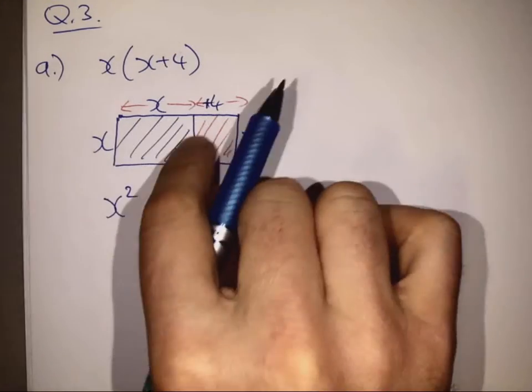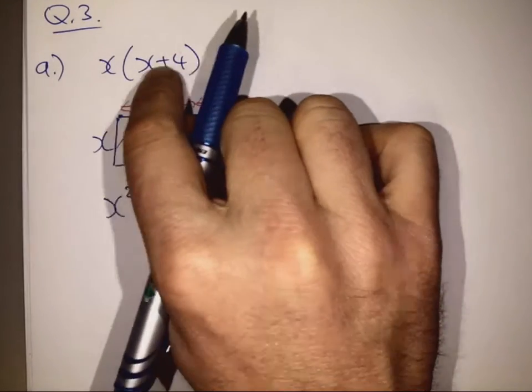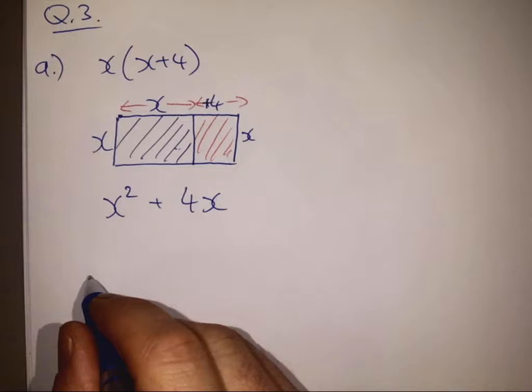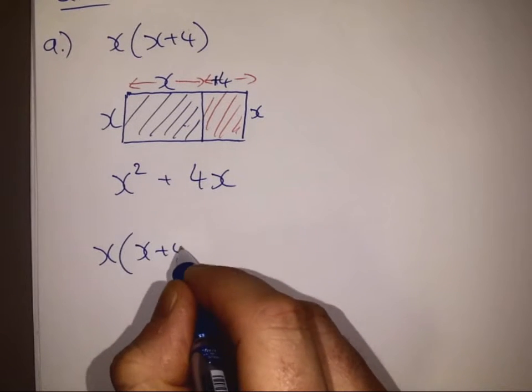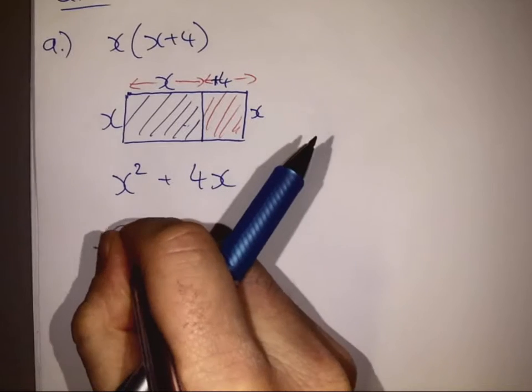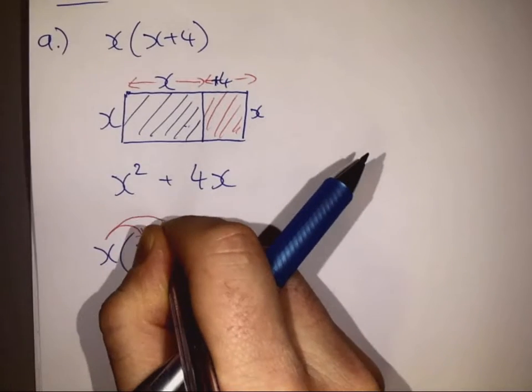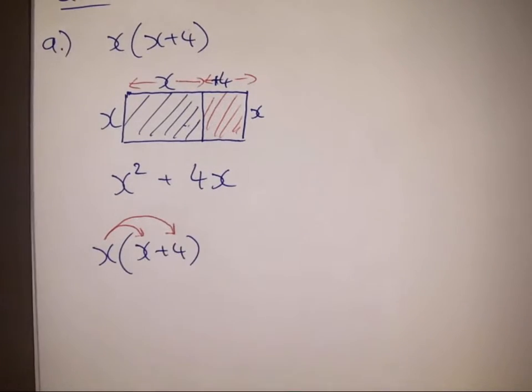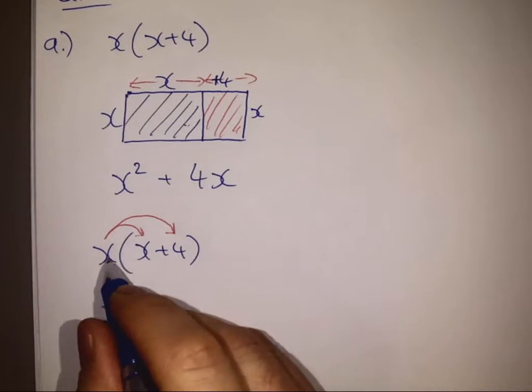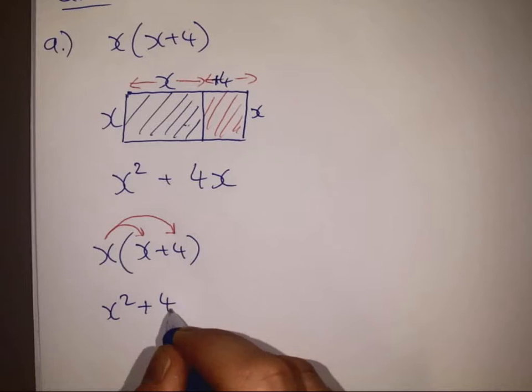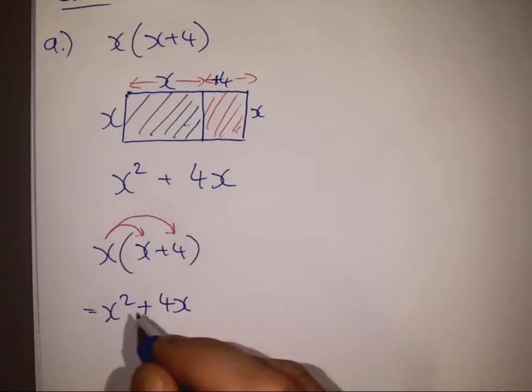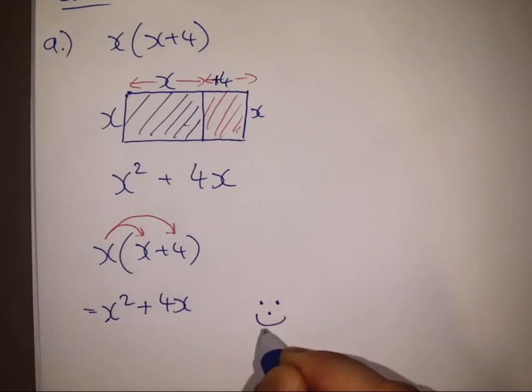Okay, so that's using a diagram to understand this up here. We could also have done it just using our technique of multiplying the first item by this guy and then multiplying him by the next item. So x times x will give us x squared, and x times plus 4 will give us plus 4x. The same answer. Okay, just like that.